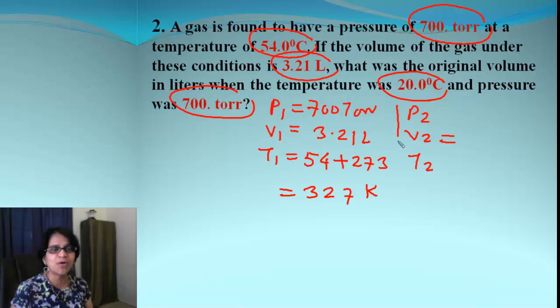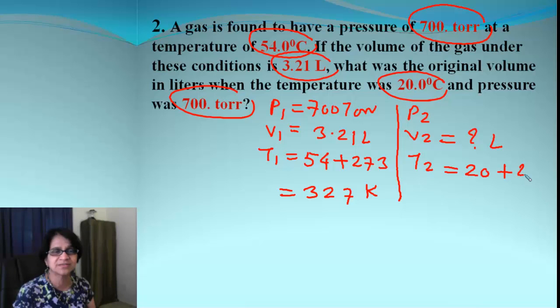What was the original volume? That means we need to find out another volume V2. V1, V2 has nothing to do with initial and final. It is just a different set of values. What else is given to us? The temperature is given 20 degrees. So, that would be 20 plus 273. And that comes out to be 293 Kelvin.